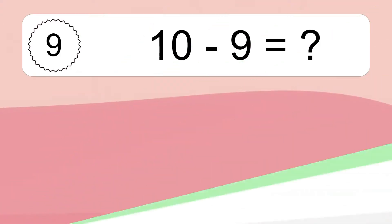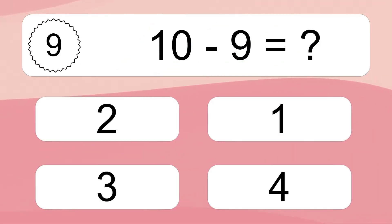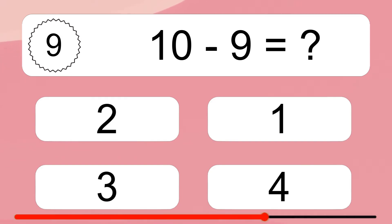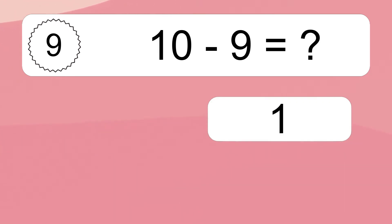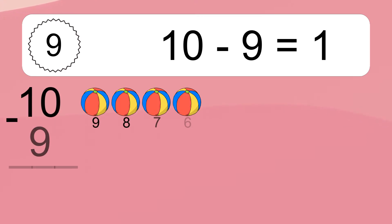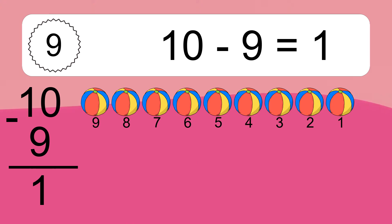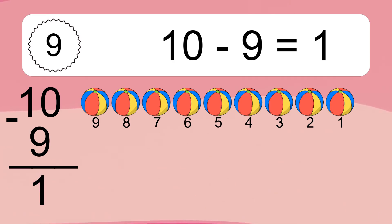10 minus 9 equals what? 10 minus 9 equals 1. Let's count it: 9, 8, 7, 6, 5, 4, 3, 2, 1.